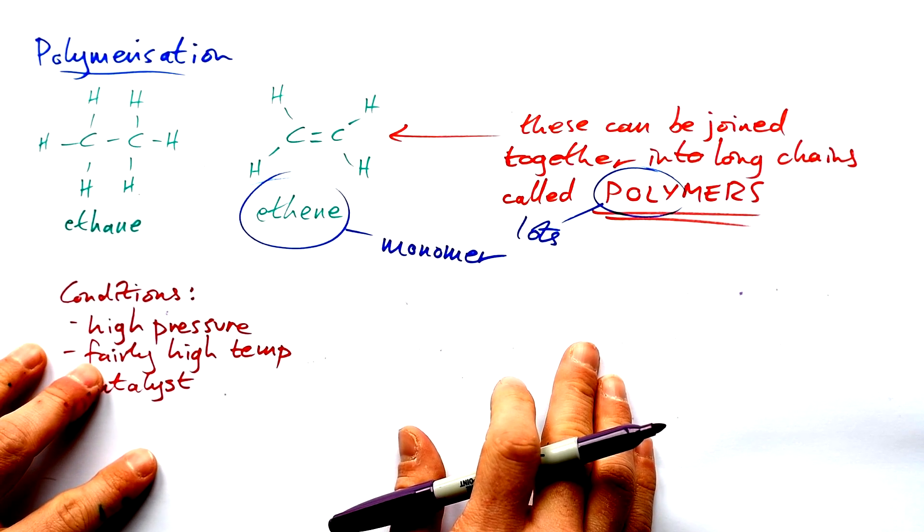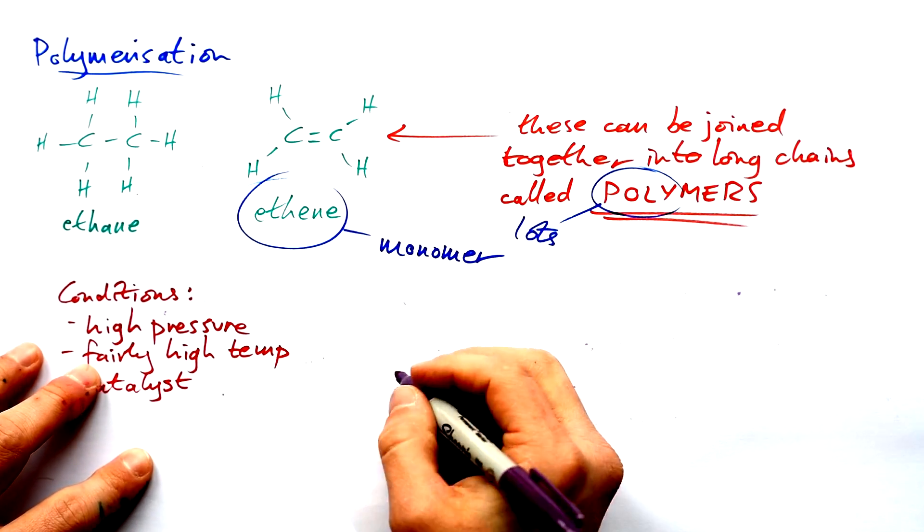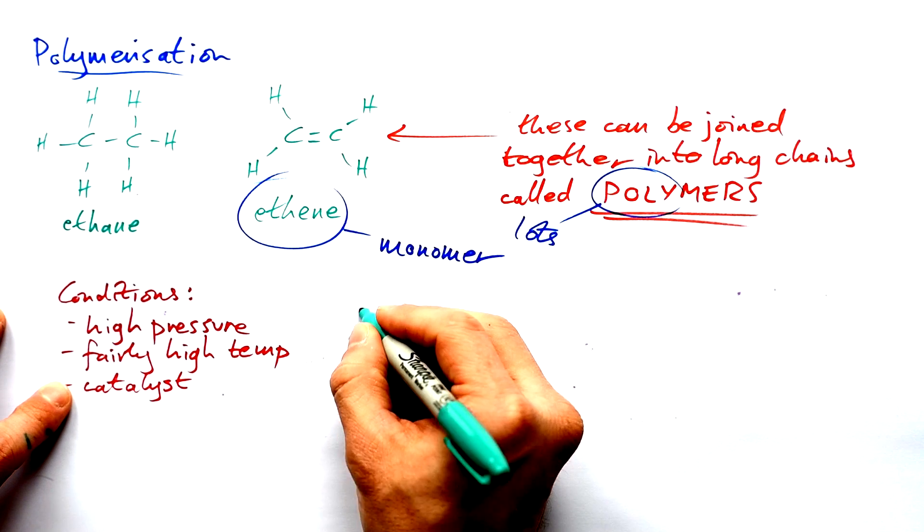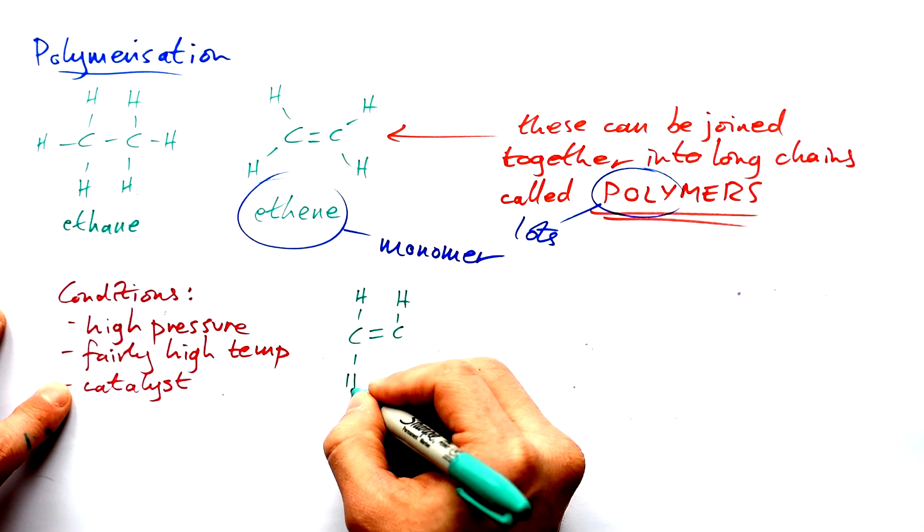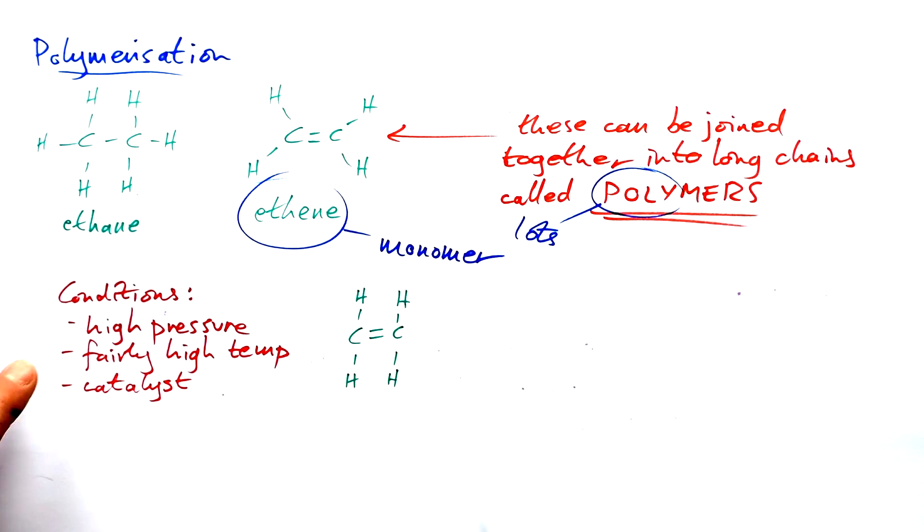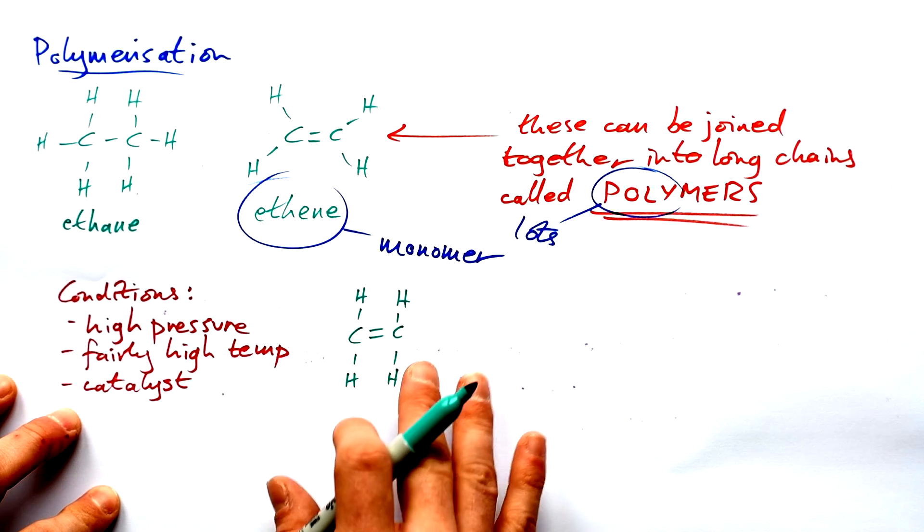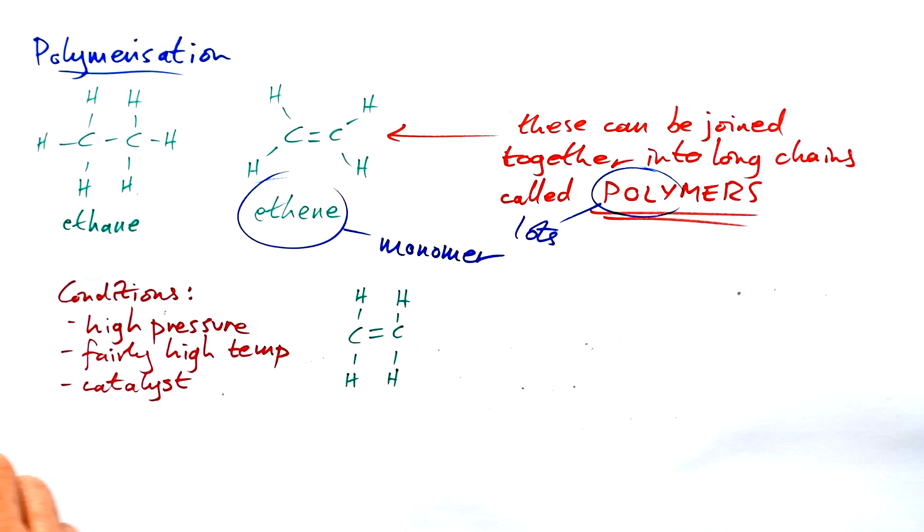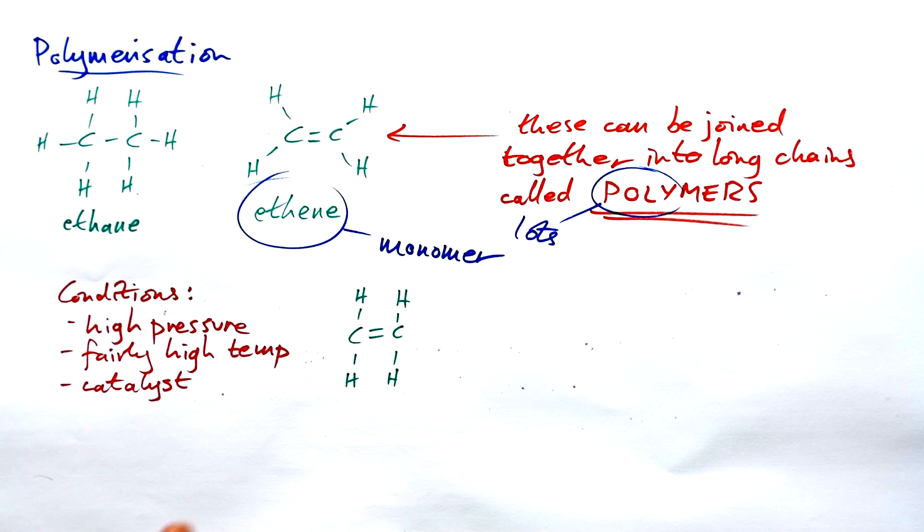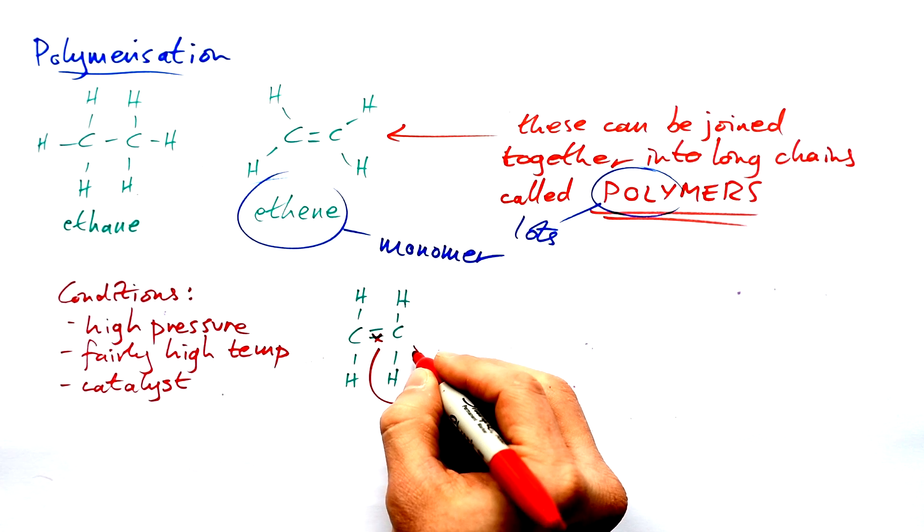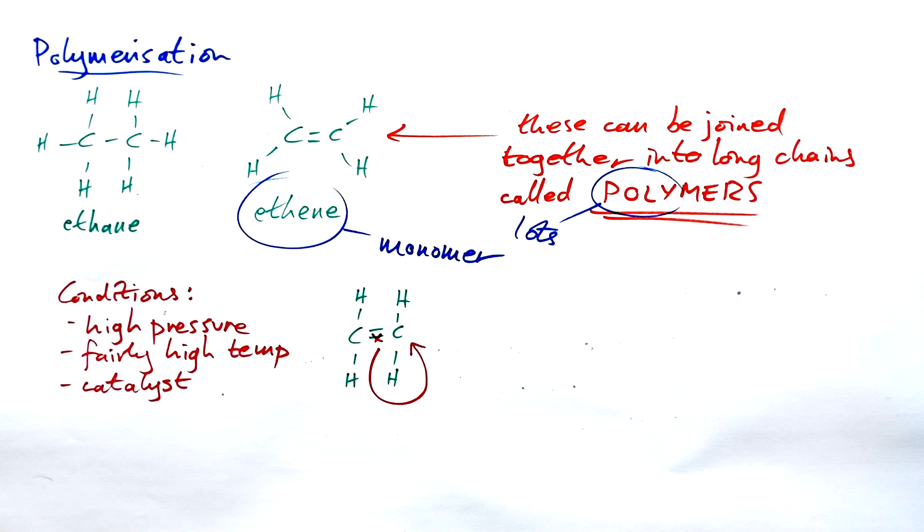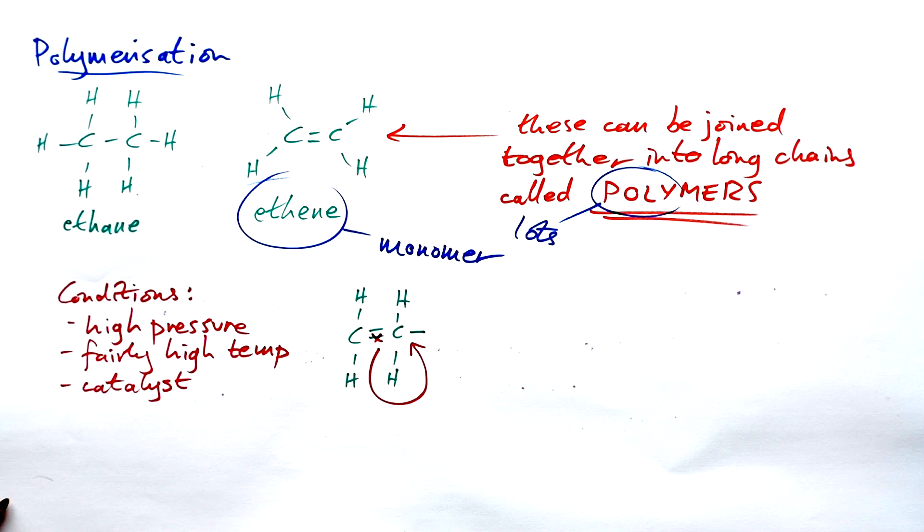So what happens when we polymerize ethene? First, I'm going to redraw ethene like this—I'm just going to draw the hydrogens going straight up. If you use the right conditions and have lots of these available, the double bond will break. One of these will flip around to the other side of the carbon and form a new bond. What does that bond to? Well, it bonds to another one of these.